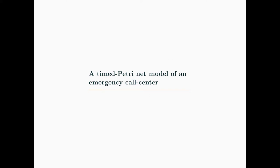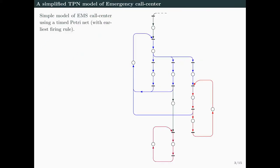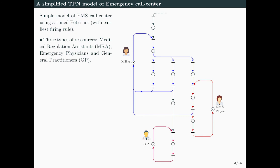Let me introduce what will be our main example of Petri net in this talk. It's a simple model of an emergency medical service call center using a timed Petri net. We have three types of resource places: medical regulation assistants (MRAs) who pick up the calls, emergency physicians who deal with very urgent calls like vital distress, and general practitioners who deal with less urgent calls.